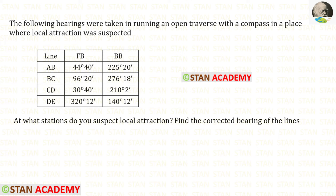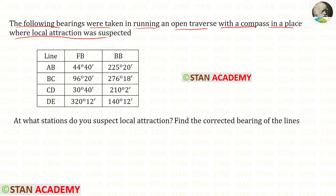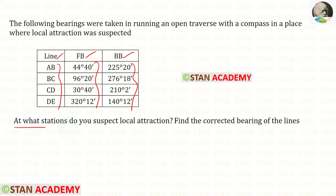Hello everyone. Today we are going to do a problem based on compass surveying. Let us read the question. The following bearings were taken in running an open traverse with a compass in a place where local attraction was suspected. Lines, forebearing and backbearing are given. At what stations do you suspect local attraction? Find the corrected bearing of the lines.